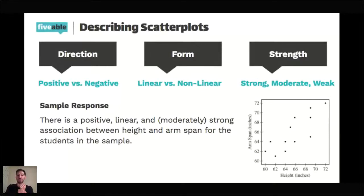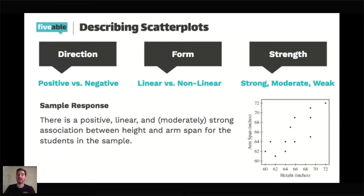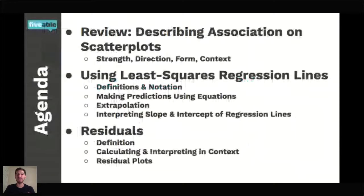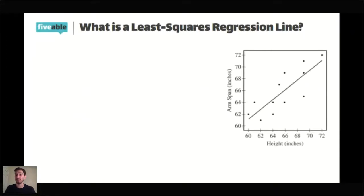We talked about what direction the association is moving — as one thing goes up, does the other go up or down? Is the association linear, like I could draw a line through it? Or does it appear to be nonlinear, where I could draw a curve or some other shape through it? And then how well does the data actually match the linear or nonlinear form — is it a strong association where it really looks like a line, or is it relatively weak? Today, we're going to specifically zoom in on linear association and start talking about regression lines.